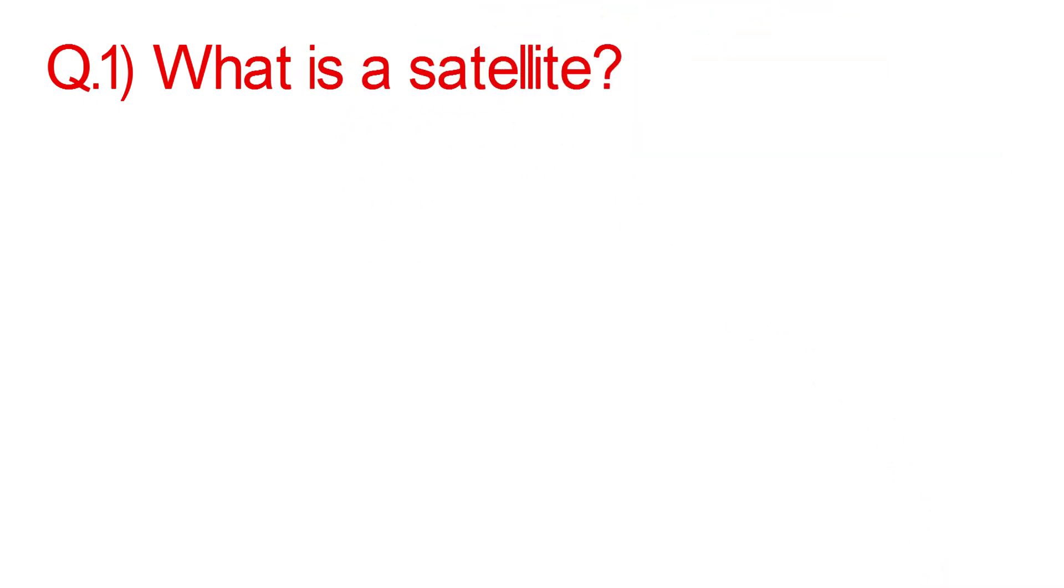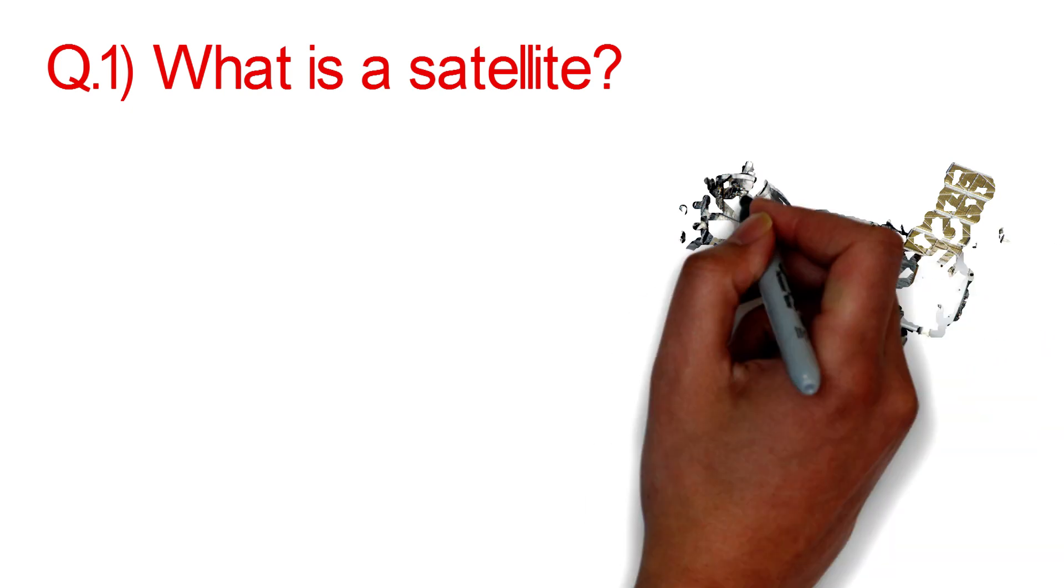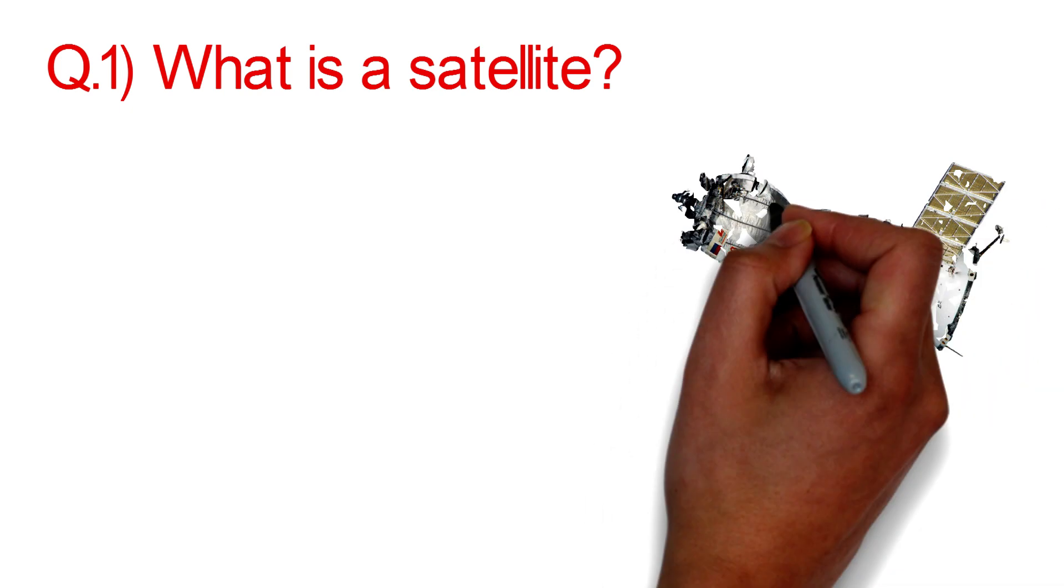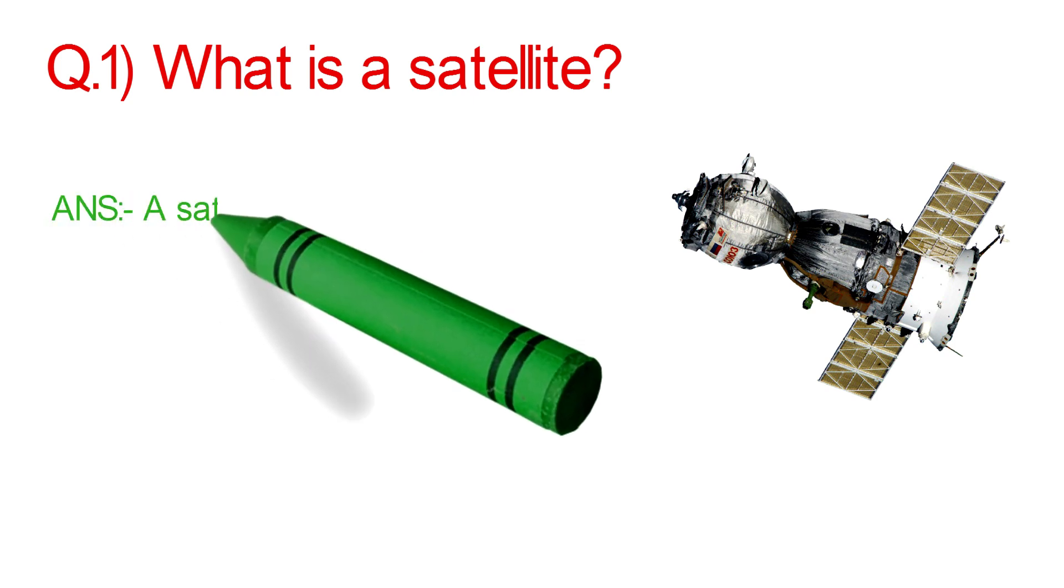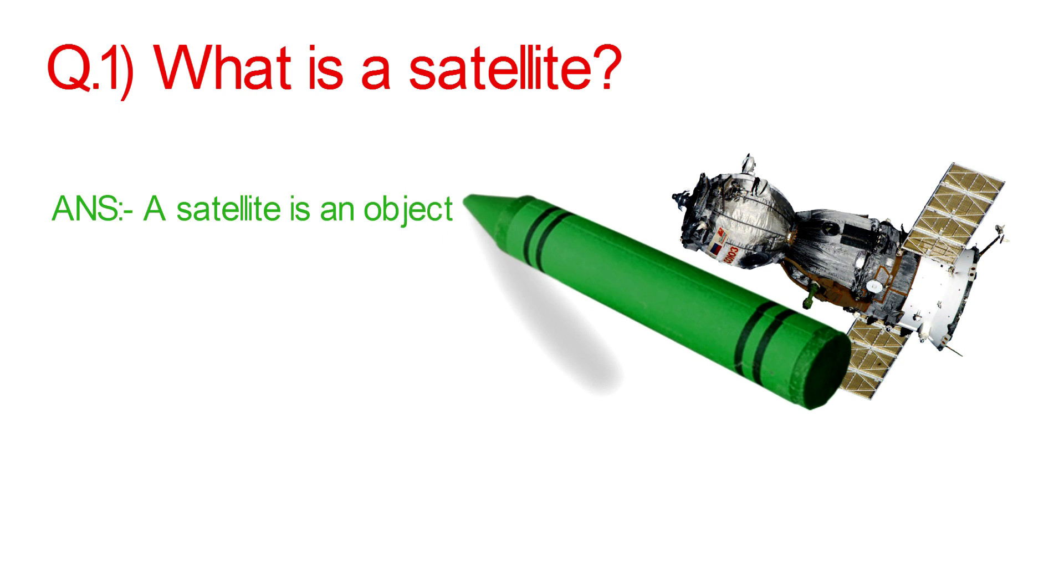Number 1: What is a satellite? A satellite is an object that revolves around another object in orbits.